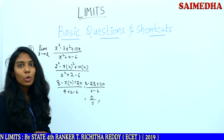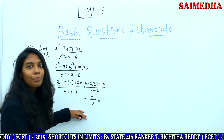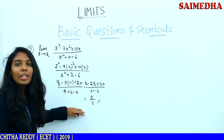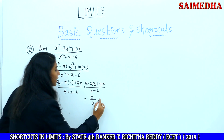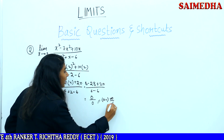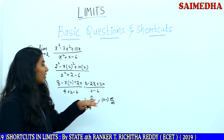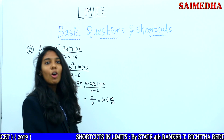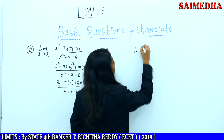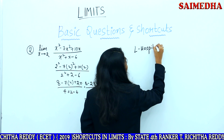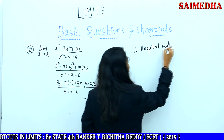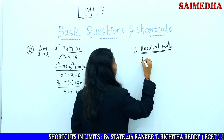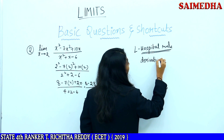Which equals 0 by 0. What do you mean by 0 by 0? 0 by 0 means indeterminate form. So, what we will do when it is in indeterminate form? We can solve this problem using L'Hôpital's rule. 0 by 0 or infinity by infinity is called indeterminate form. L'Hôpital's rule means derivative of numerator by derivative of denominator.